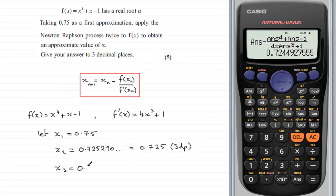And we've got 0.72449 and so on. And so this rounded to three decimal places is going to be 0.724 (3dp).